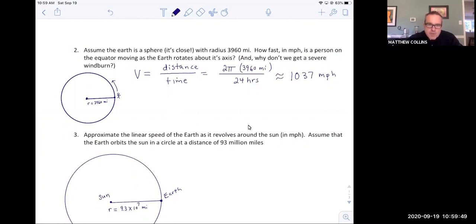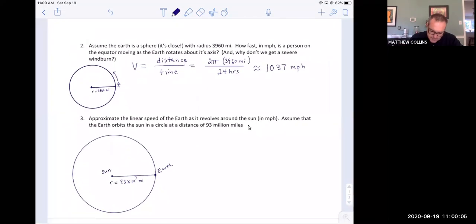Of course, the second part says, why don't we get a severe wind burn? Well, because the atmosphere moves with us, right? We don't really feel ourselves moving at that incredible rate of speed. The earth moves, but its atmosphere up to a couple hundred miles up also moves with us. So we don't even feel it.